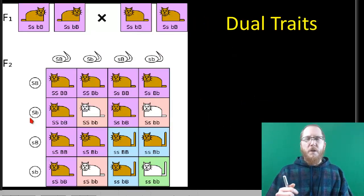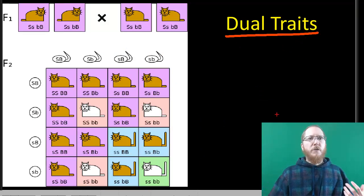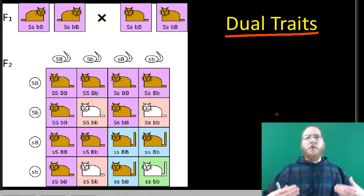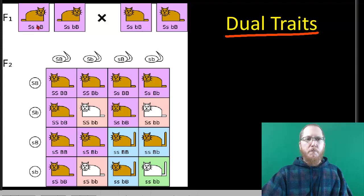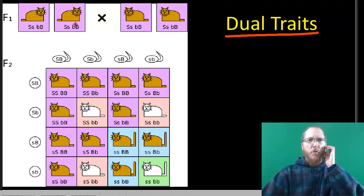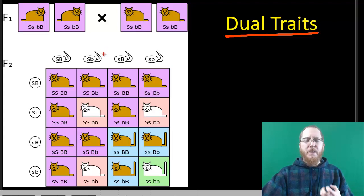The more complex one that we're going to wrap up with is if you're looking at two traits at once. Mendel did some research where he did dihybrid crosses. In this case, it's showing big S, little s, big B, little b. When he crosses two individuals that have that, we have to figure out what are their gametes going to be.